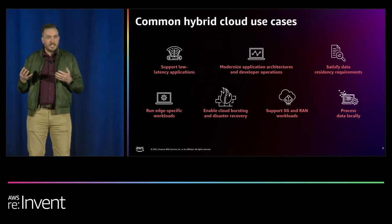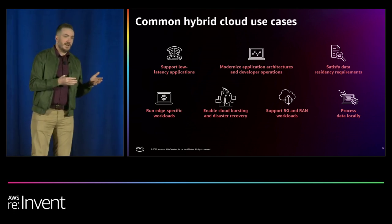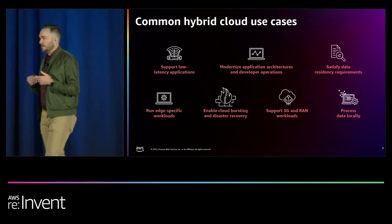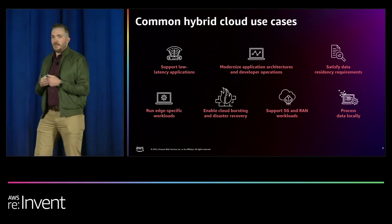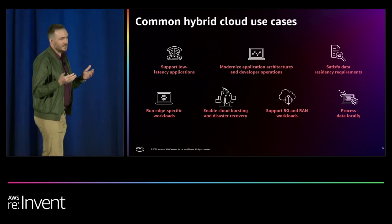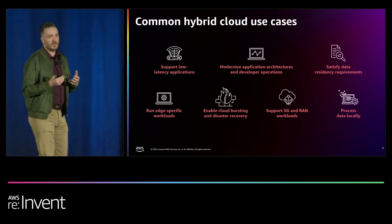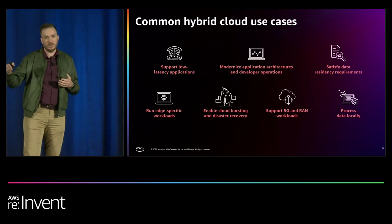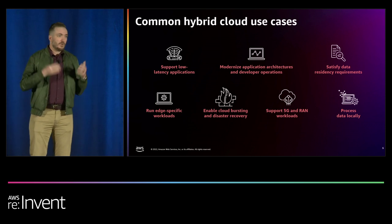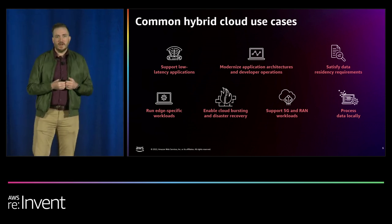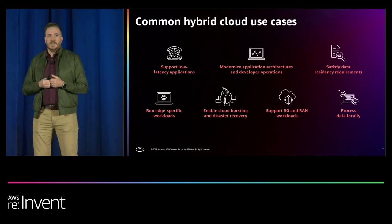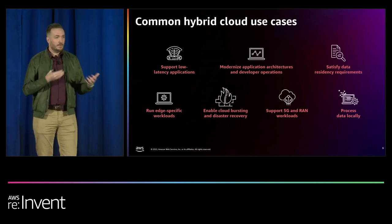The fourth is edge-specific workloads. You see this with 5G, with manufacturing, with fast food joints that have a thousand stores and want to run some kind of workload in every single store. It might be a small box or a group of boxes in a broom closet, but they want to run Kubernetes there, run containers, and they need help doing that.